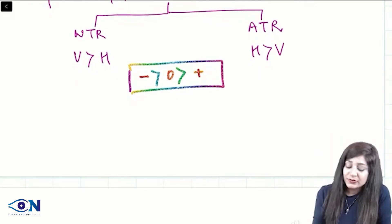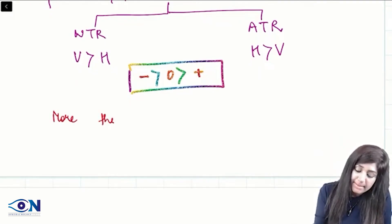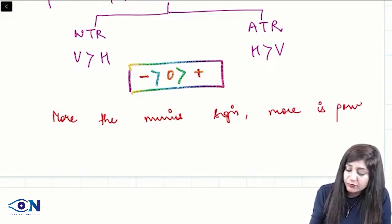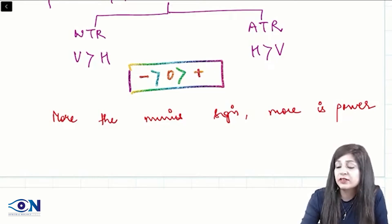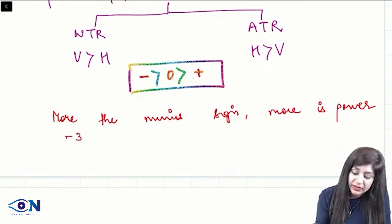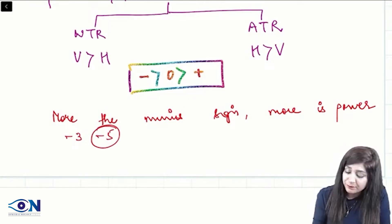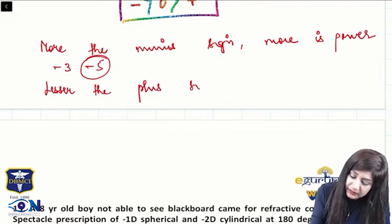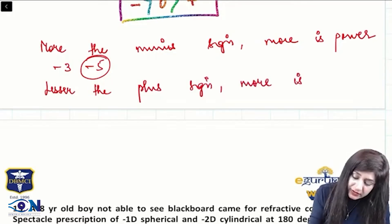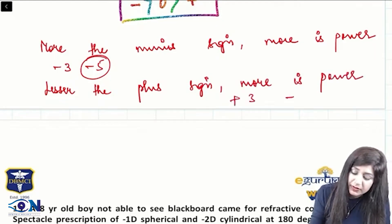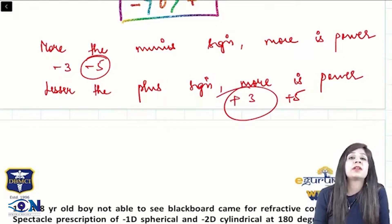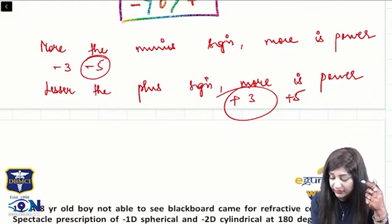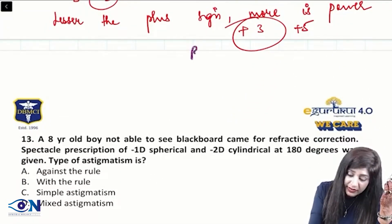For comparing minus signs: more the minus sign, more the power. So between minus 3 and minus 5, minus 5 has more power. For plus signs it is the opposite: lesser the plus sign, more the power. So between plus 3 and plus 5, plus 3 has more power. Once you know this basic rule, it becomes possible to solve the questions.